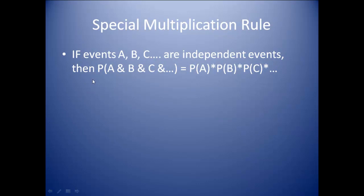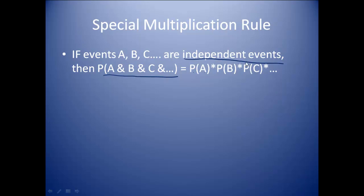We have a special multiplication rule that we'll use quite often. If events A, B, C — and more — are independent, then the AND probability is simply their individual probabilities multiplied together: P(A) times P(B) times P(C), and so on. This only works if the events are independent. If they're not independent, you have to go back to the general multiplication rule, which includes the conditional probability part.